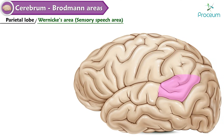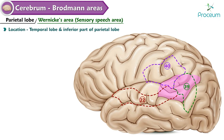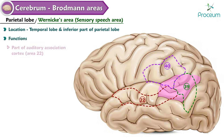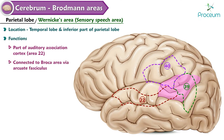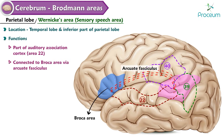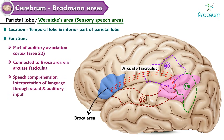Wernicke's area, also known as the sensory speech area — Areas 22, 39, and 40. Location: temporal lobe and inferior part of the parietal lobe. Functions: part of the auditory association cortex (Brodmann area 22); connected to Broca's area via the arcuate fasciculus; speech comprehension and interpretation of language through visual and auditory input.